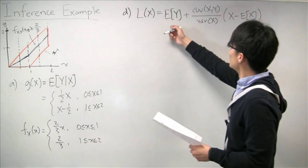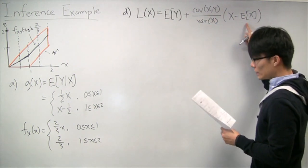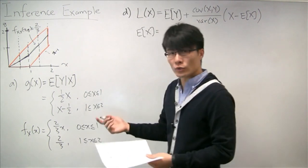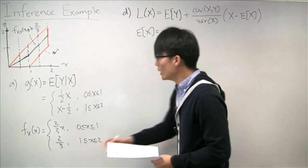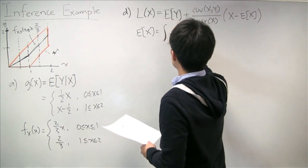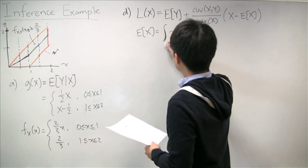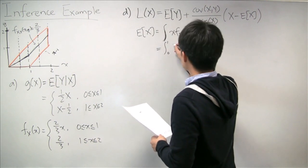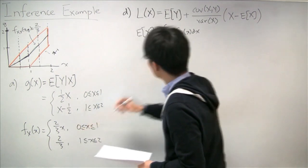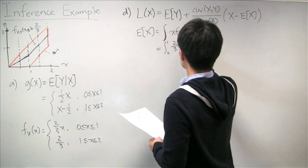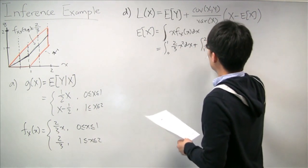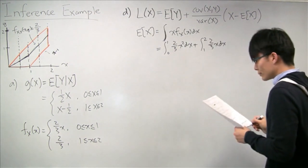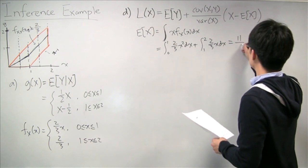To calculate the LLMS estimator, we need four quantities. Let's start with E[X]. Using the marginal PDF of X we found, E[X] = ∫ X · f_X(X) dX. For X from 0 to 1, this gives ∫ (2/3)·X² dX, and for X from 1 to 2, ∫ (2/3)·X dX. When calculated out, this equals 11/9.